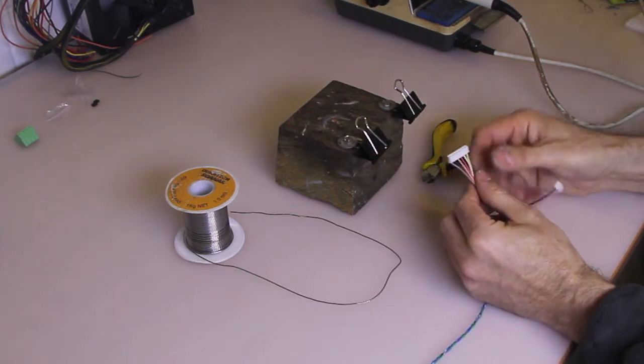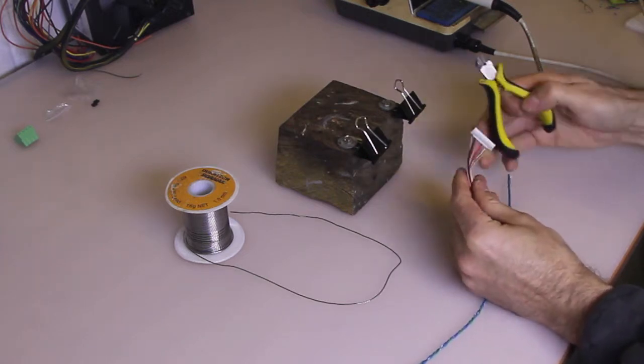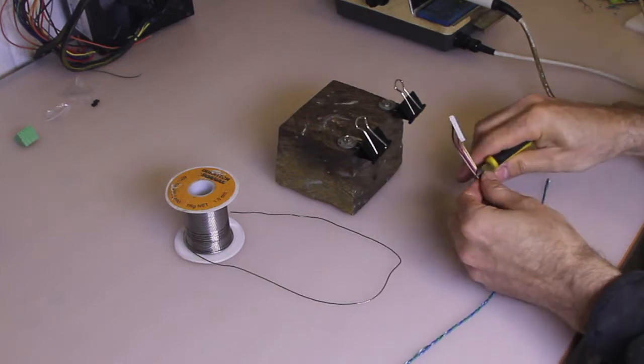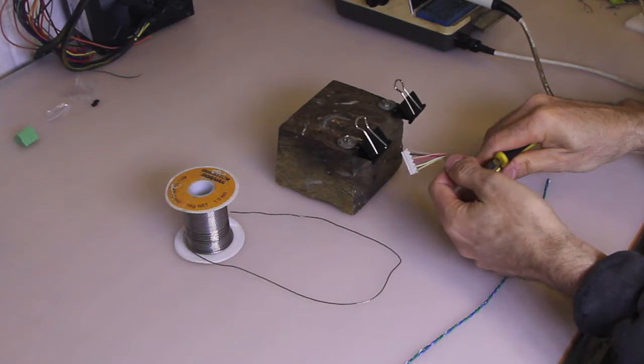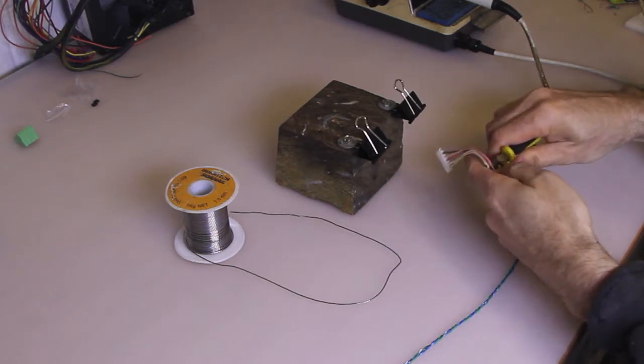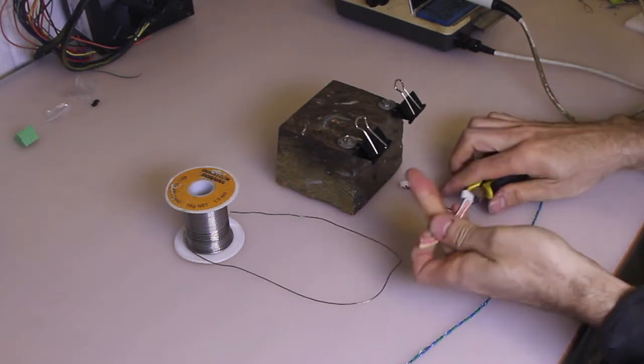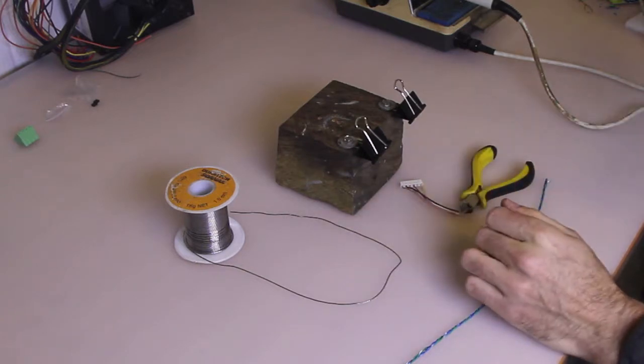So I'm just going to prep this first. This is the connector on the NEMA. We're just going to chop it, don't need too much length there, we're just going to chop it in half. We might be able to use the other end of the connector on another motor, so put that aside.